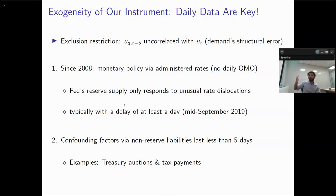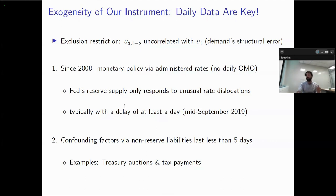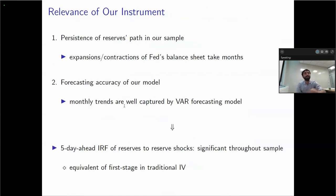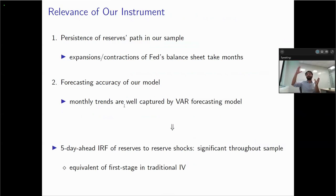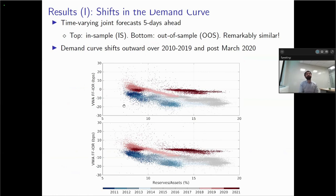Our instrument is relevant because in the post-crisis period the path of reserves displays great persistence, and our model is good at forecasting the path of reserves. Now let me move to the results. The main finding is that the reserve demand curve has shifted over time. The top chart shows in-sample joint forecasts of prices and quantities from 2010 to 2021; the bottom chart shows out-of-sample — real-time — joint forecasts. They are remarkably similar, which speaks to the model's real-time performance.